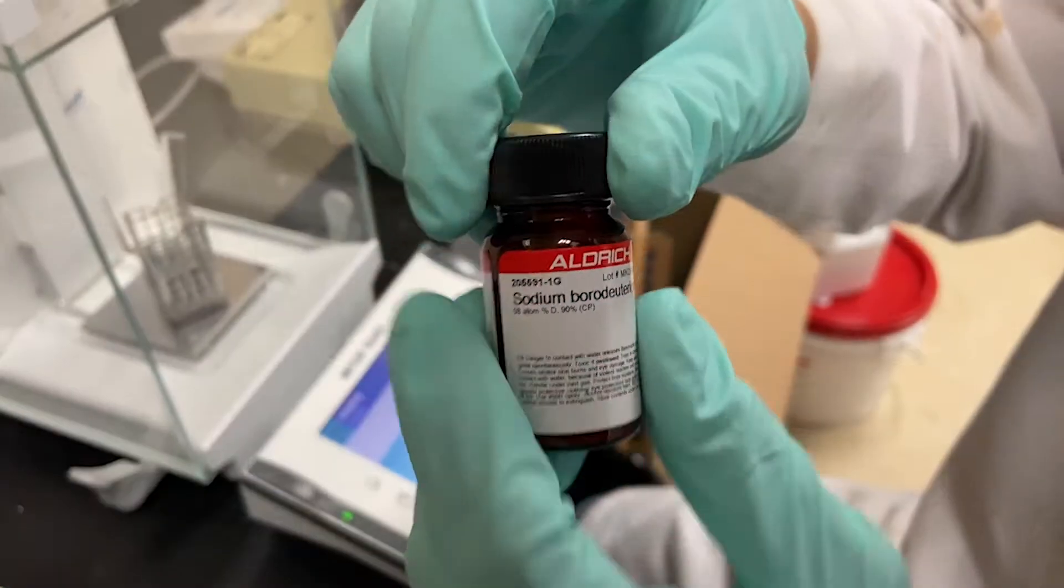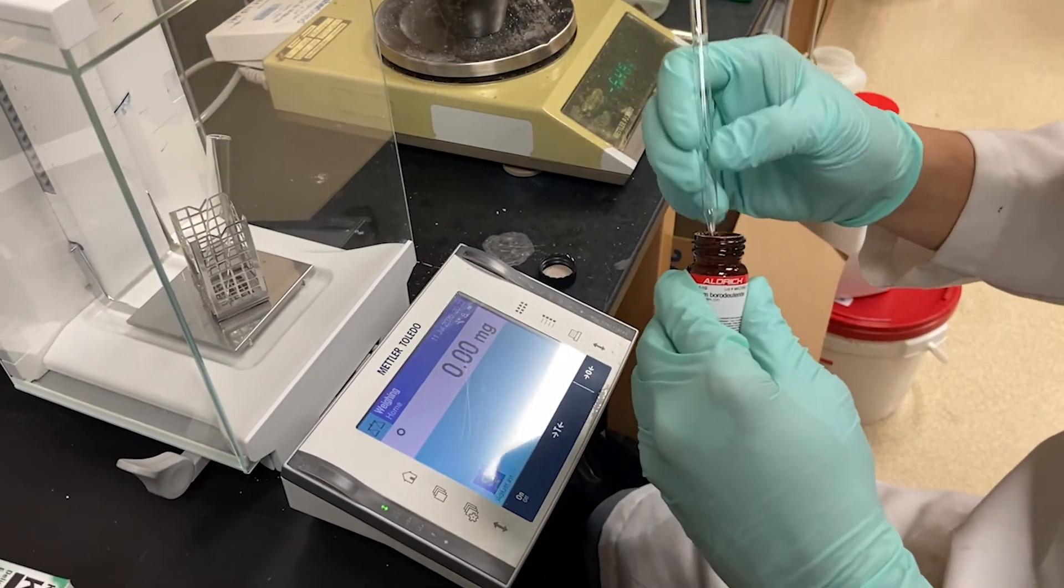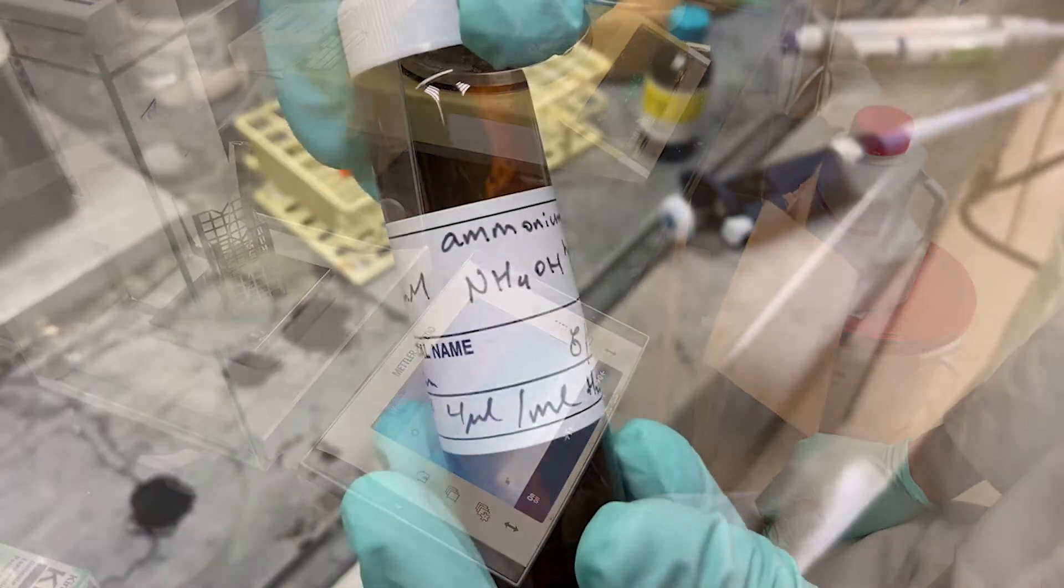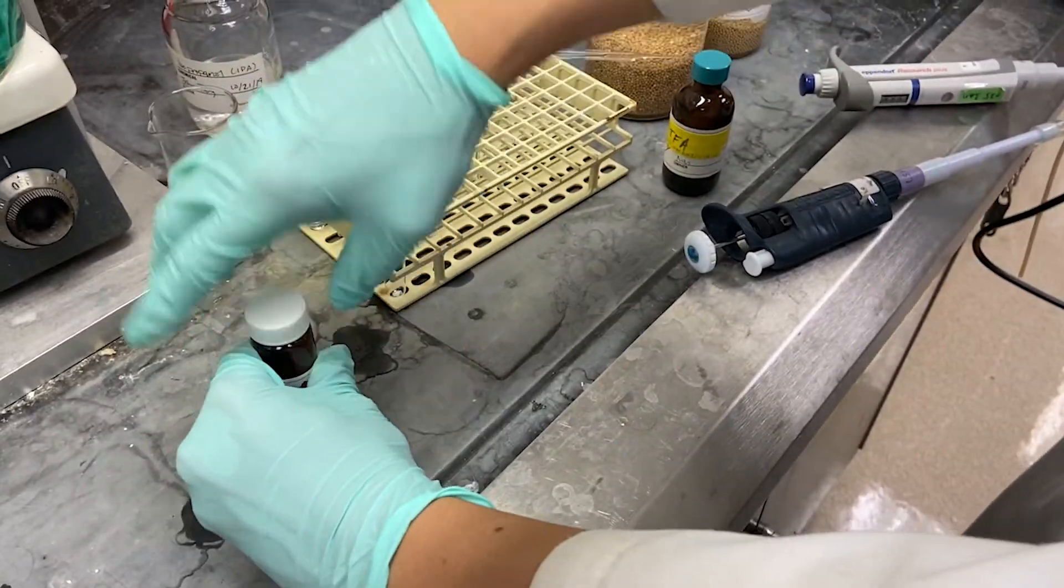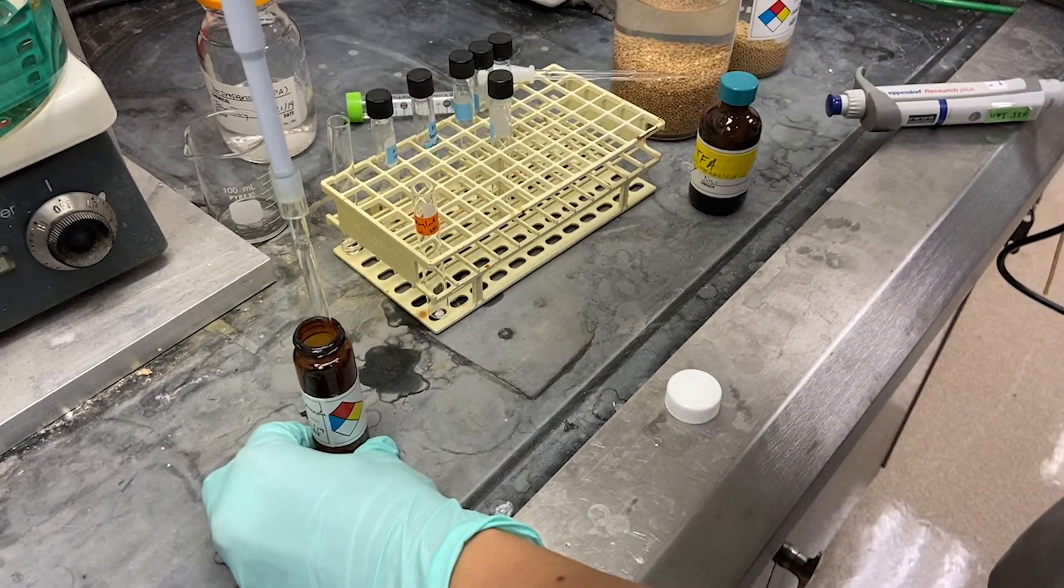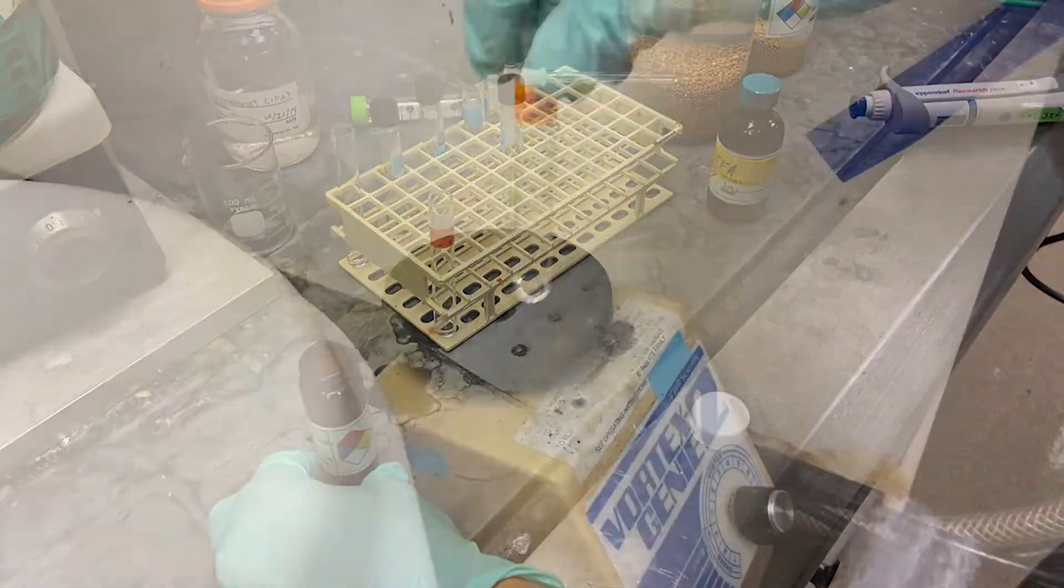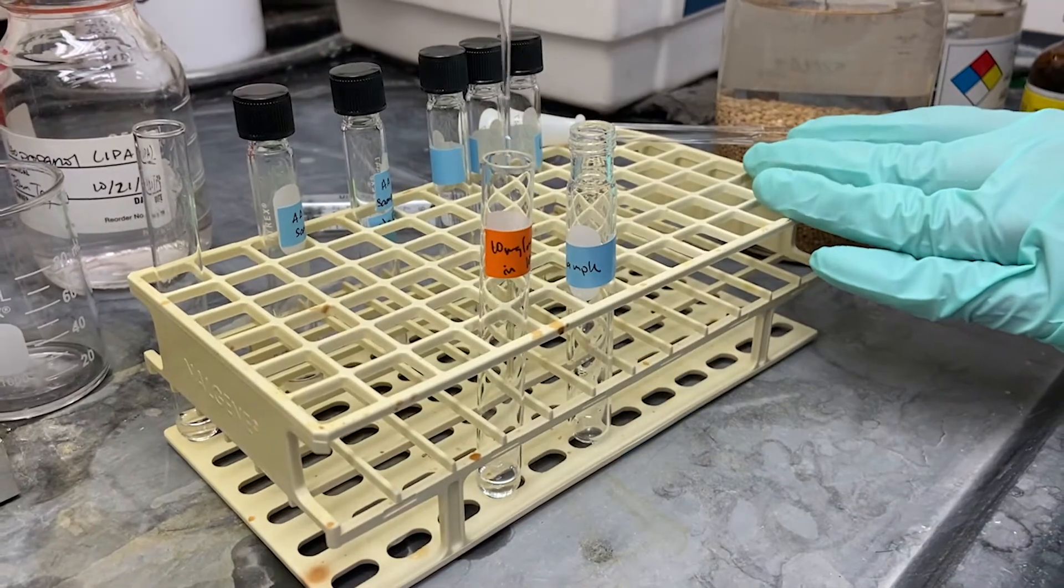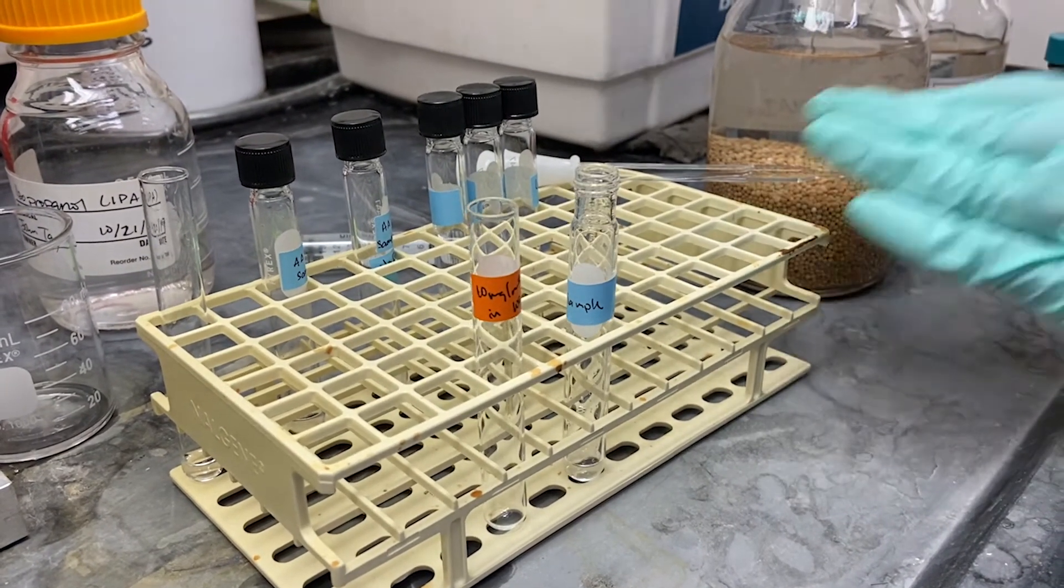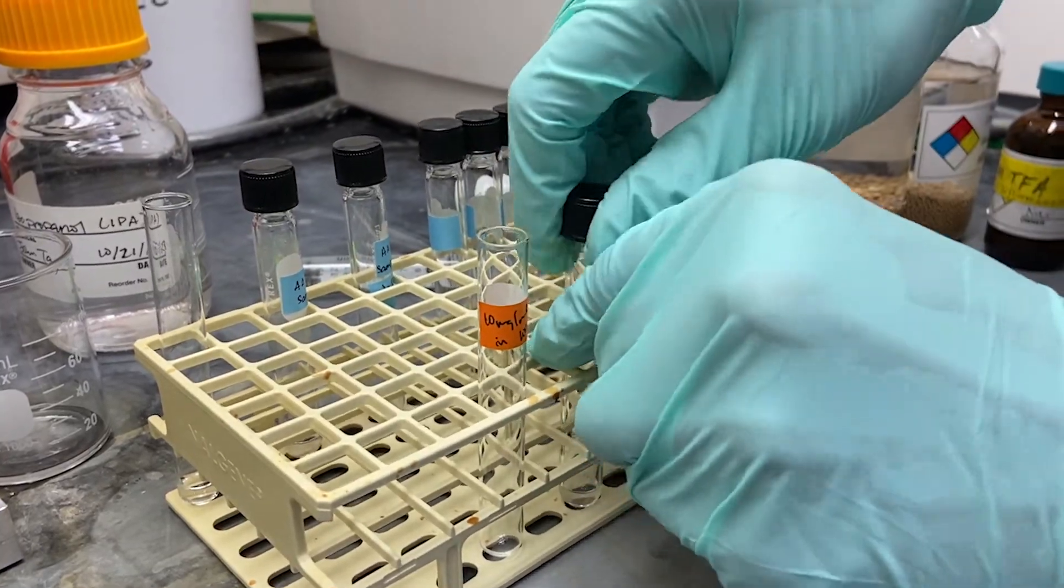For reduction, we prepare a 10 milligram per milliliter solution of sodium borodeuteride in 100 millimolar ammonium hydroxide. 400 microliters of this solution is added to the sample. The sample is lightly vortexed and allowed to incubate at room temperature for three hours, but can also go overnight.